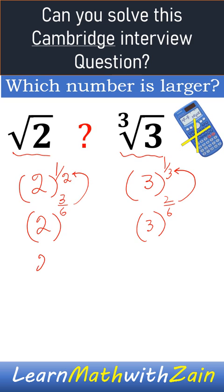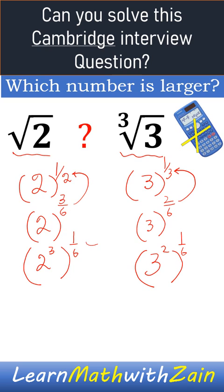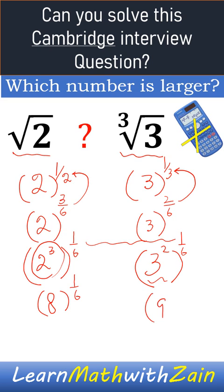Now we can write these as (2³) to the power 1/6 and (3²) to the power 1/6. The powers are now the same. So 2 cubed is 8, giving us 8 to the power 1/6, and 3 squared is 9, giving us 9 to the power 1/6.